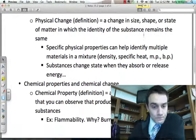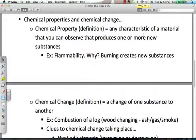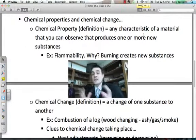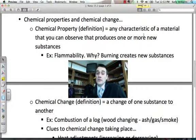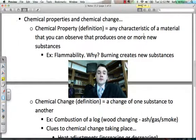Moving on here, chemical properties and chemical change. Defined a chemical property. A chemical property defined is any characteristic of a material that you can observe that produces one or more new substances. So we're not keeping the same substance here. We're actually having new substances, one or more being created. A classic example of this would be like flammability, igniting something on fire. Why is this a good example of a chemical property if something can actually be engulfed in flames? Because that creates new substances. The act of combustion, breaking something down through fire, creates new substances.